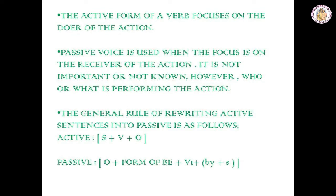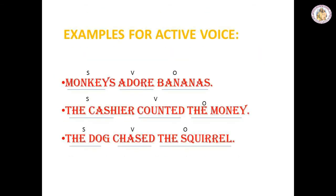Doing this usually generates a preposition as well — that is the preposition 'by'. By should be there in the passive voice. That sounds much more complicated than it is. Passive voice is actually quite easy to detect. For these examples of passive voice, we will transform three active sentences to illustrate the difference. The examples of active voice are: monkeys adore bananas; the cashier counted the money; the dog chased the squirrel.